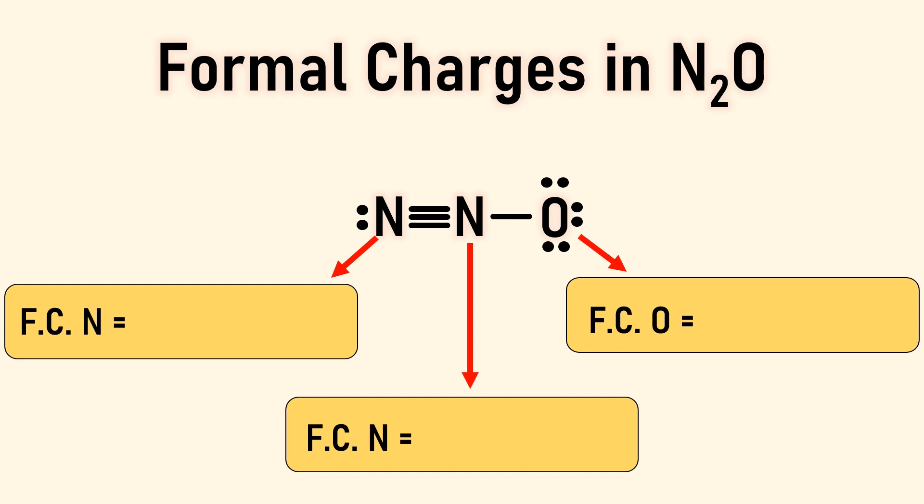For the left nitrogen, we'll start with five valence electrons, then subtract two non-bonding electrons, and three shared electrons in the covalent bonds. This gives a formal charge of zero.